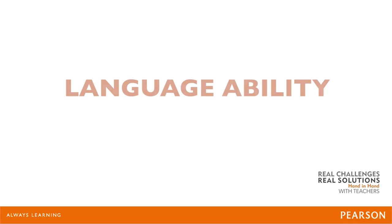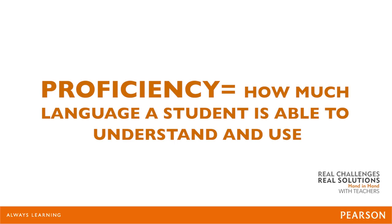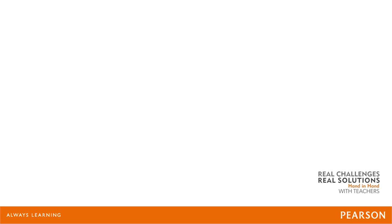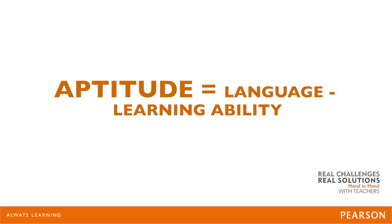Another challenge I often encounter in class is that students differ in terms of language ability. The term is not as straightforward as it sounds. We should consider two factors here: proficiency — how much language a student is able to understand and use at any given point — and aptitude, that is to say language learning ability. For example, although a student may have a low level of proficiency and be weak in English, they may have a strong aptitude for learning, and with the correct support, be perfectly capable of catching up.